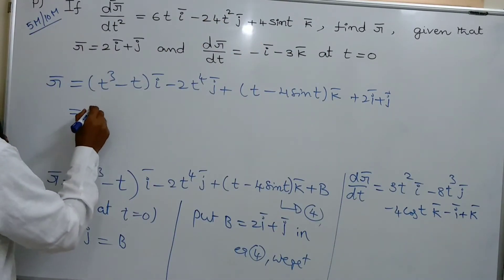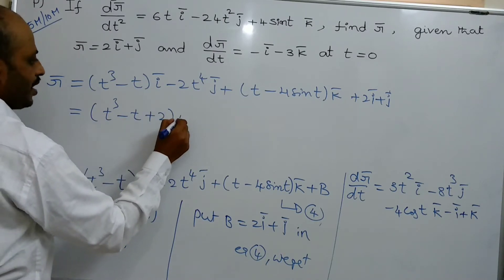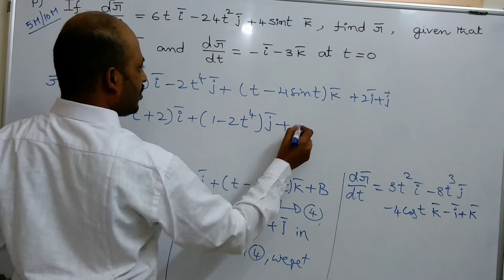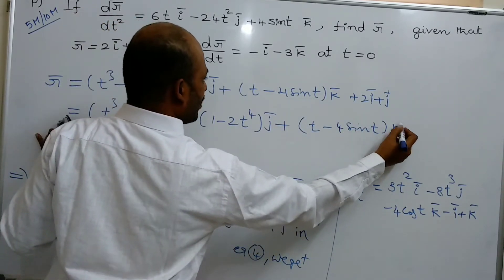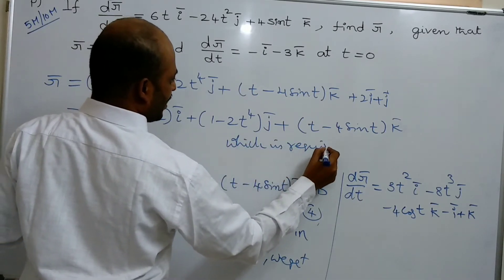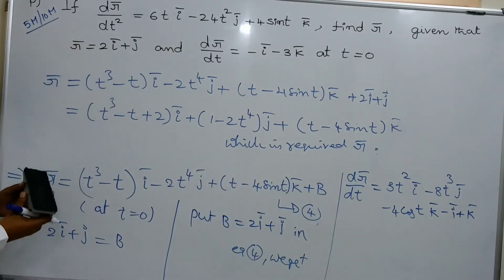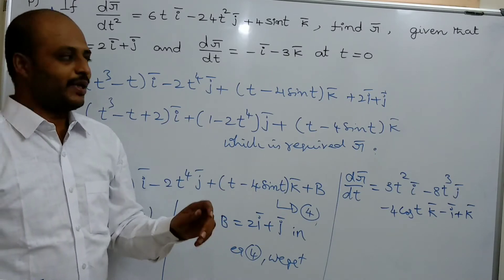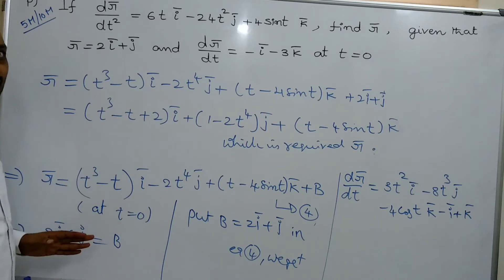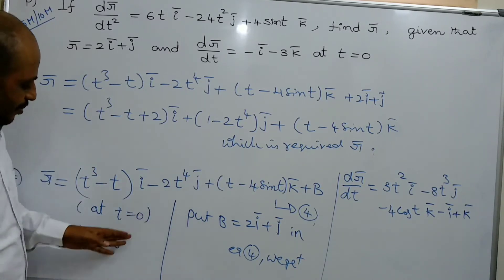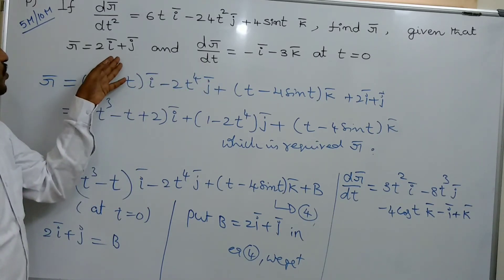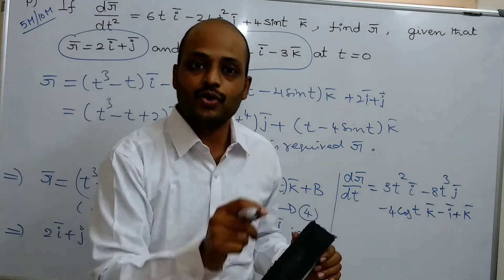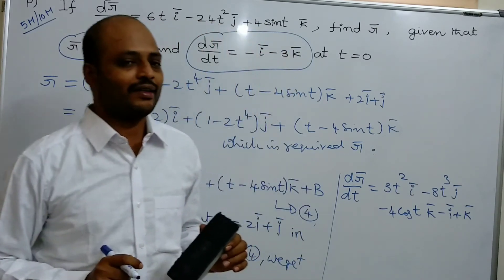Simplifying: r̄ equals (t³ minus t plus 2)ī plus (1 minus 2t⁴)j̄ plus (t minus 4sin(t))k̄, which is the required r̄. Observe that you integrate twice and use the two given conditions — r̄ and dr̄/dt — to find the integral constants A and B.